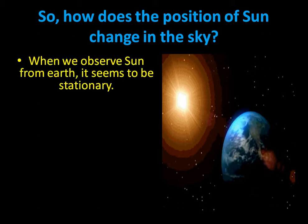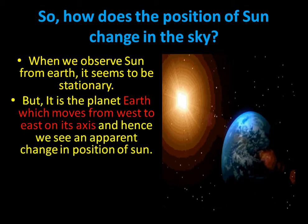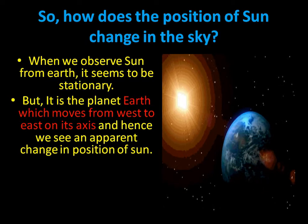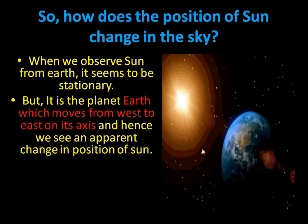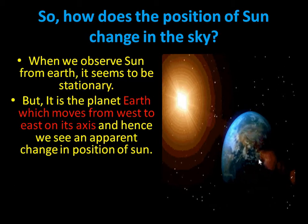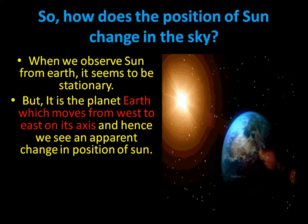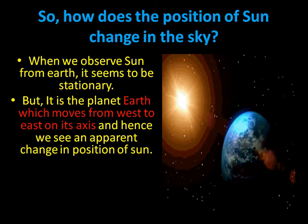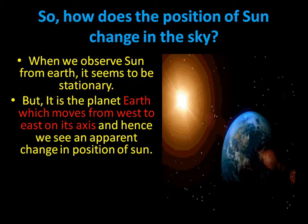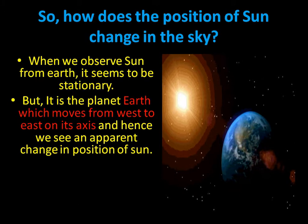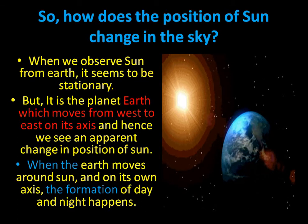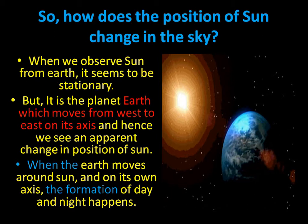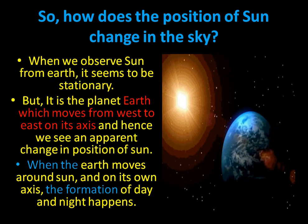When we observe the sun from earth it seems to be stationary — it just seems to be stationary but it is not. Actually it is the planet earth which moves from west to east on its axis. Because of this rotation there is an apparent change in the position of the sun. It just appears to us that it is rising from the east or setting in the west, but actually only the earth is moving — it is only rotating.